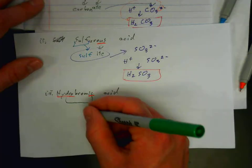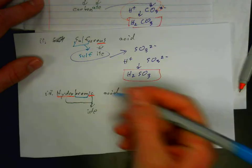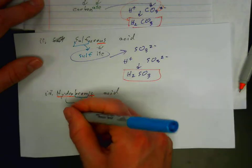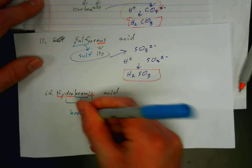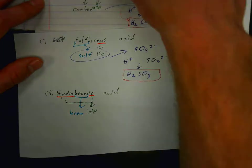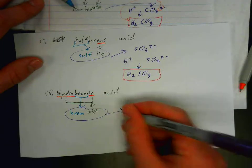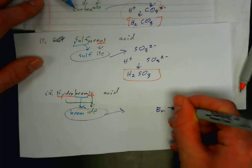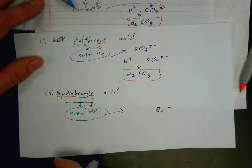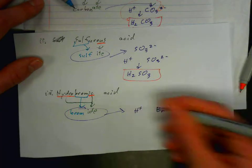This anion ends in IDE. If we pull down brom, we see that we have bromide. Well, bromide is monatomic. So that's just Br minus. So that gets combined with hydrogen. And it makes the formula HBr.